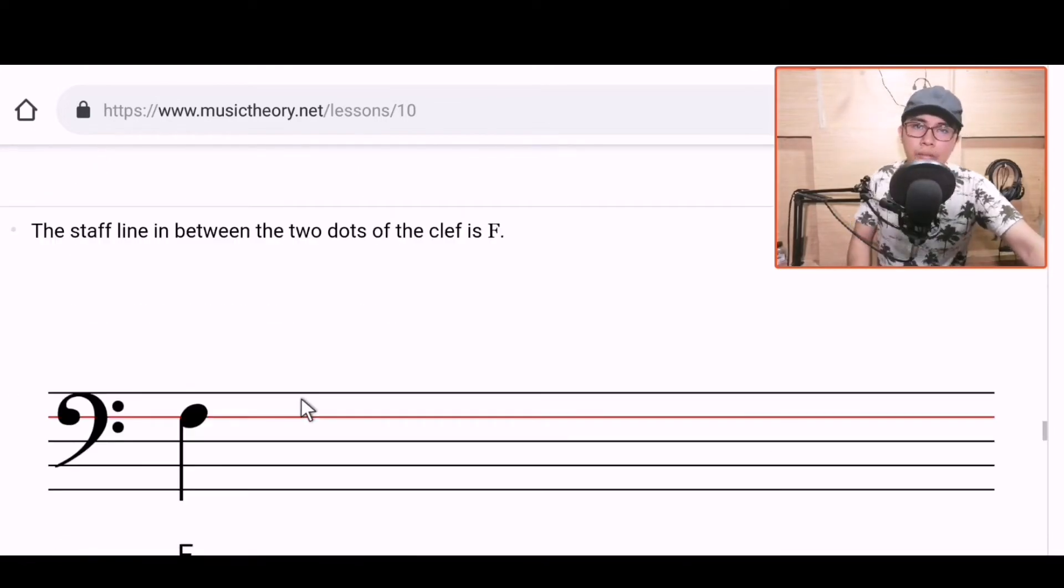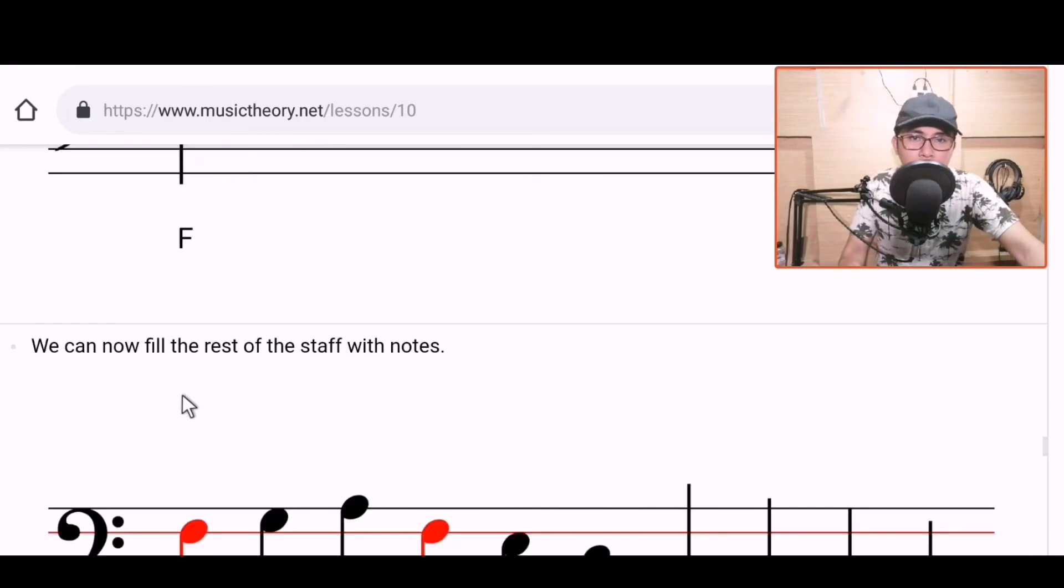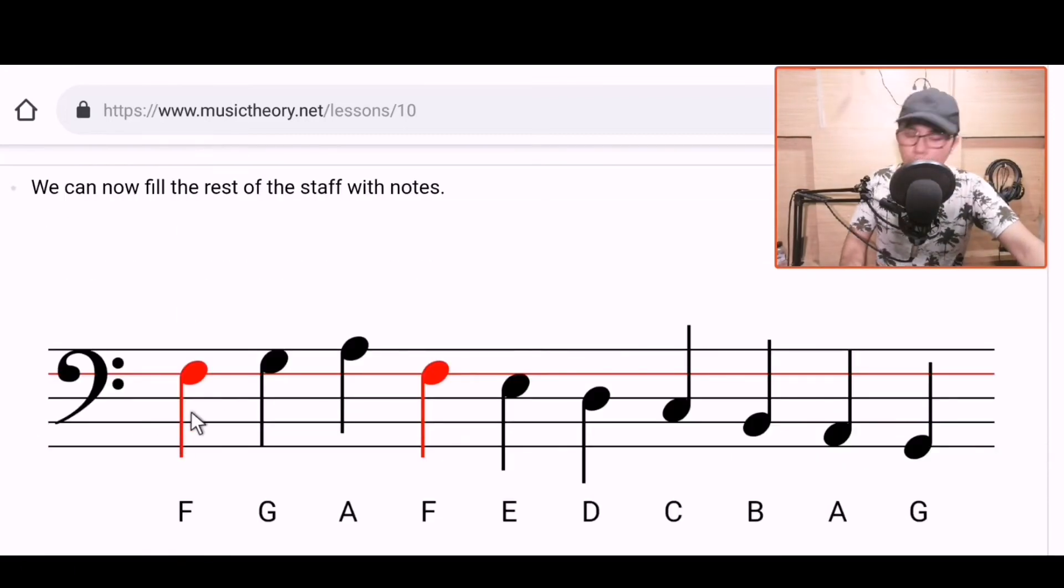And then let's move to the bass clef. The staff line between the two dots of the clef is F. This is one of the things you need to memorize about F clef. The symbol, the two dots in the symbol. The line in the middle of those two symbols is the note F. Now, this F is five steps below the middle C. So C, B, A, G, F. This is the F that's shown there. The reading method is just the same as I said for G clef: line, space, line, space, line, ledger line at the top. We can now fill the rest of the staff with the notes. We have F, G, A. Okay.